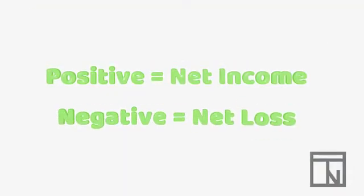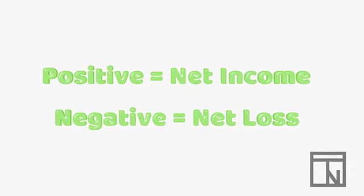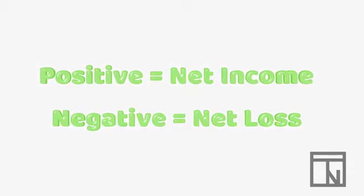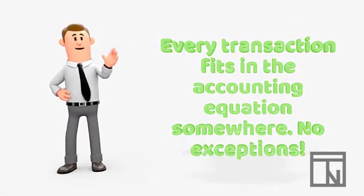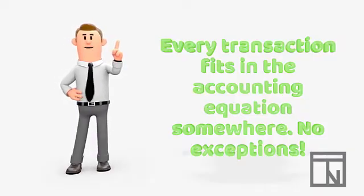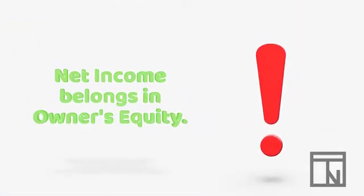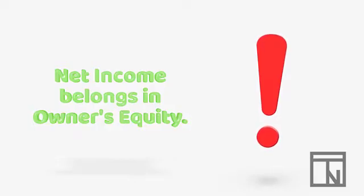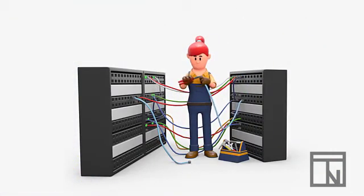The amount of money left over when expenses are subtracted from revenue is known as net income, if the amount is positive, and net loss, if the amount is negative. Also, we have learned previously that everything in accounting fits into the accounting equation, and there is no exception. Any net earnings from the company belong to the owners by default, so net income, and the revenue and expenses that create it, are considered part of owner's equity. Now that you understand the basics of net income, let's try an example.